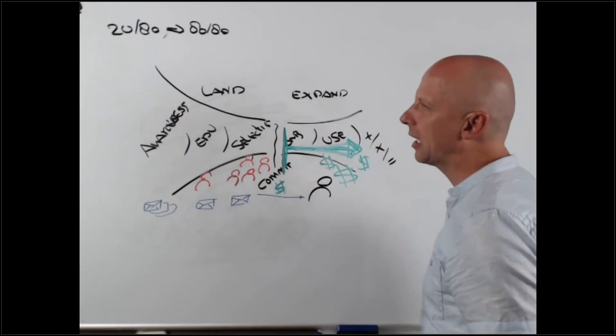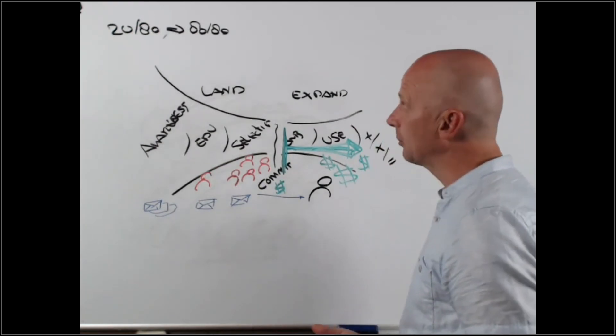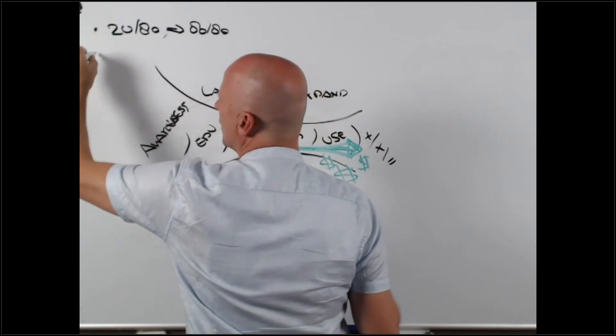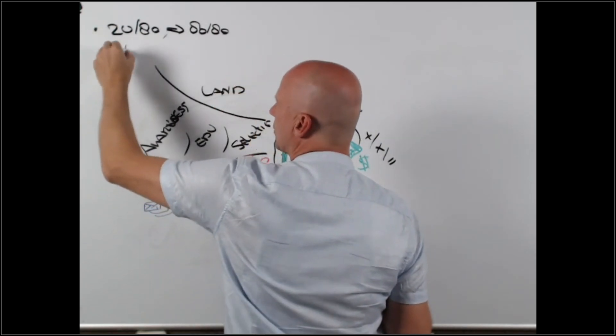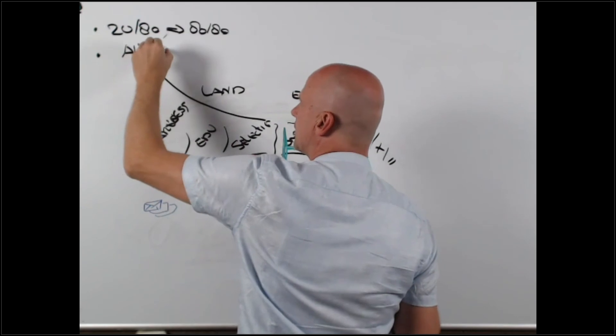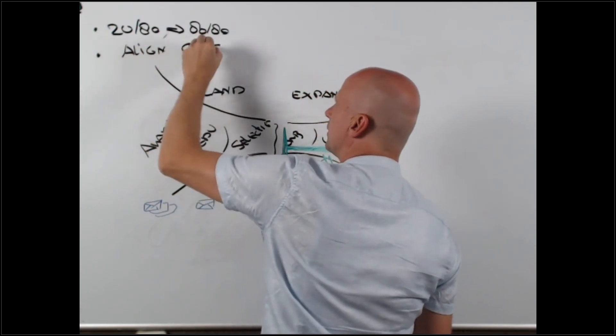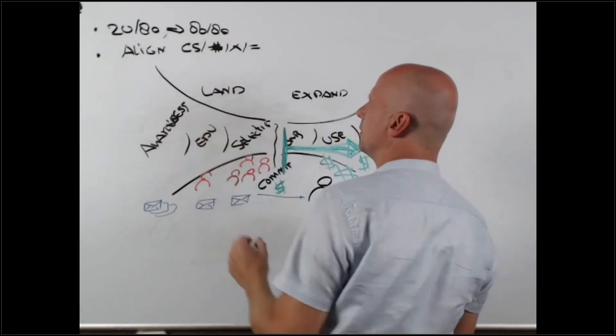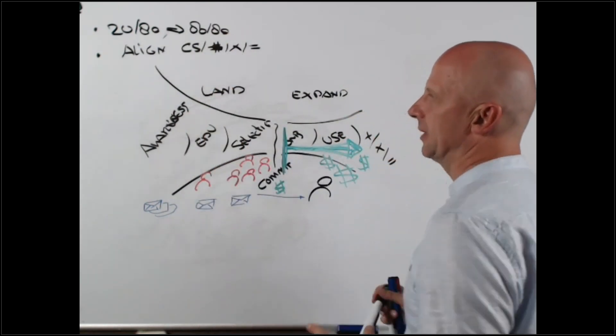This has shifted and needs to be realigned. I'm going to add this to the board as number two: we need to align customer success with upsell, cross-sell, and renewal. That needs to happen.